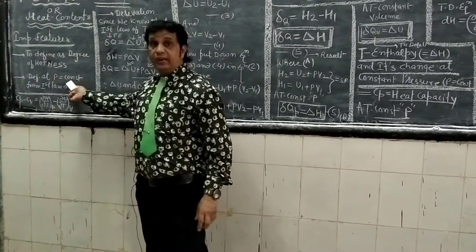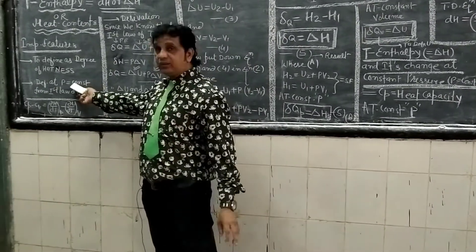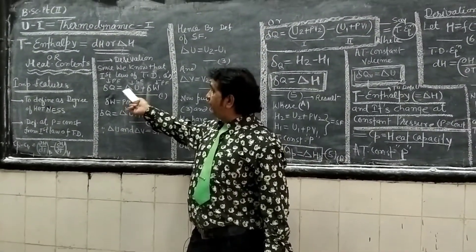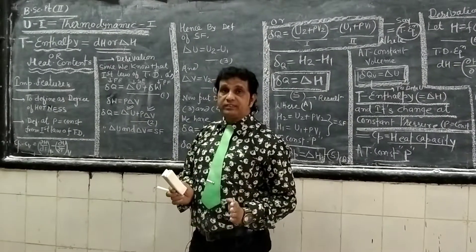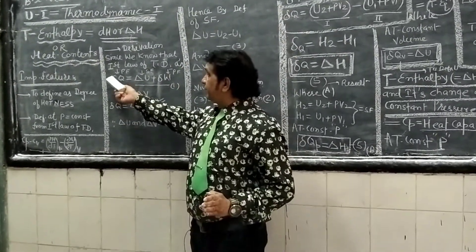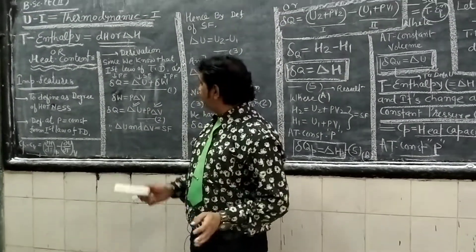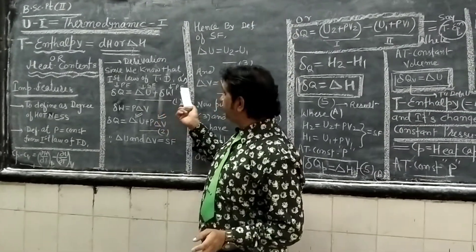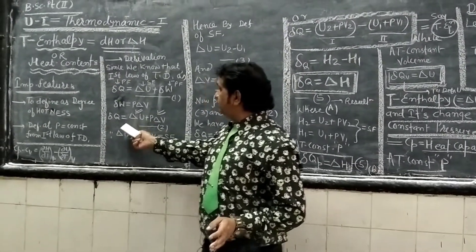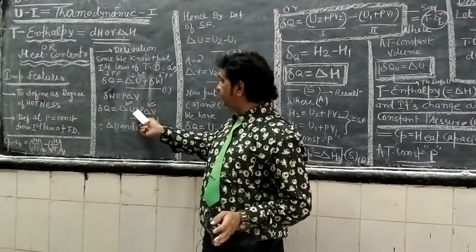Enthalpy is derived from the first law of thermodynamics. From the first law: ΔQ = ΔU + ΔW. Here ΔQ and ΔW are path functions. Substituting ΔW = PΔV, we get ΔQ = ΔU + PΔV.